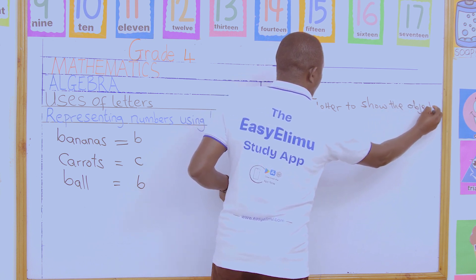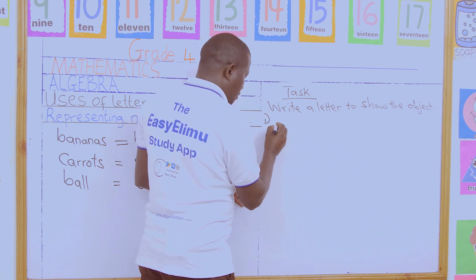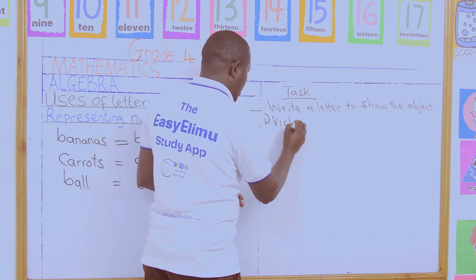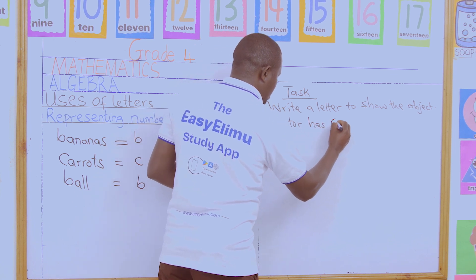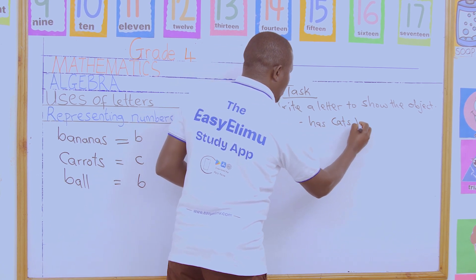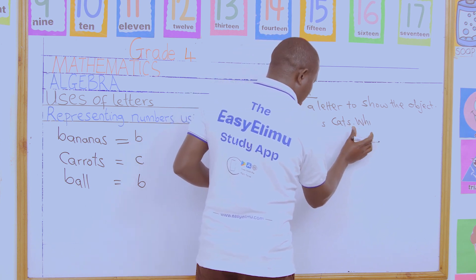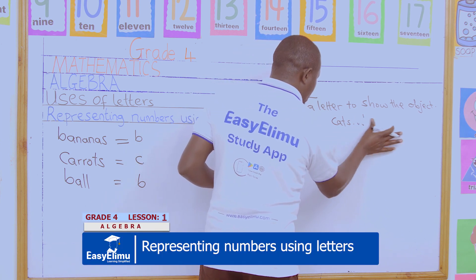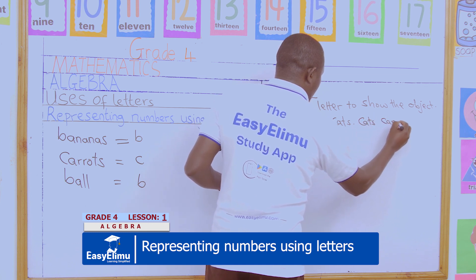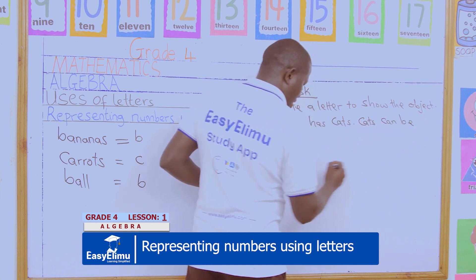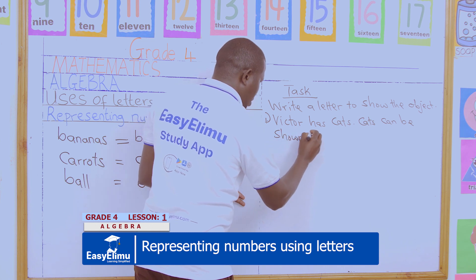For number one, we'll say Victor has cats. Which letter will you use? Cats can be represented by which letter? Cats can be shown by a letter.